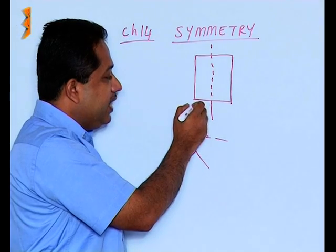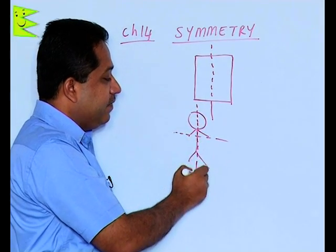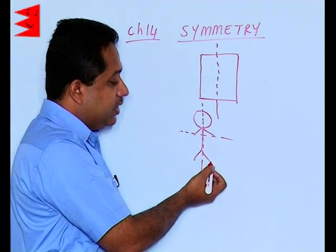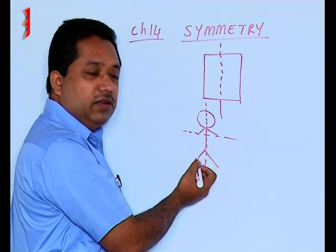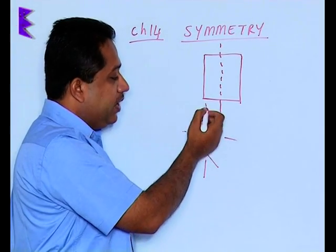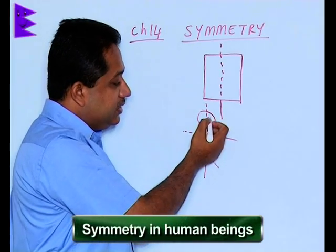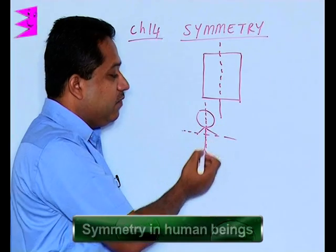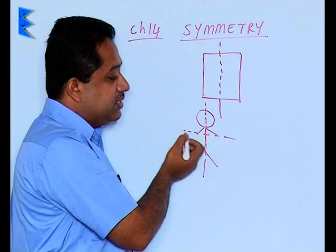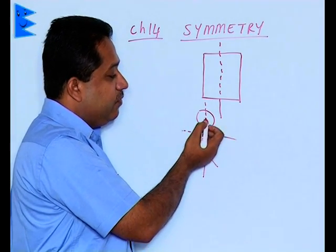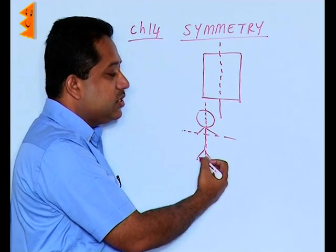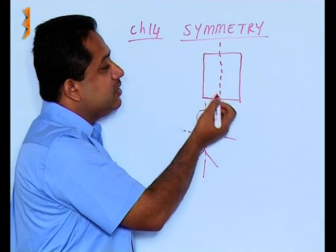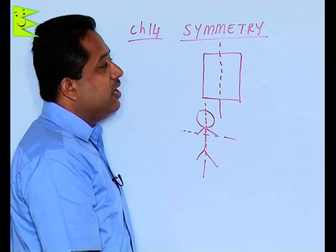But if we divide it vertically, then we find that one hand is here and one hand is here, one leg on one side and similarly on the other side. So the human being is symmetrical with respect to the vertical axis, which is often called the y-axis. The horizontal axis, that is the x-axis, shows that the upper and lower portions are totally different. So we consider this line of symmetry for different figures.